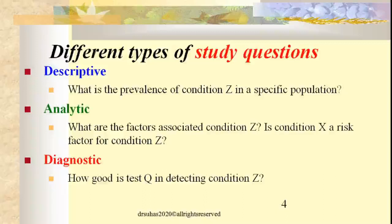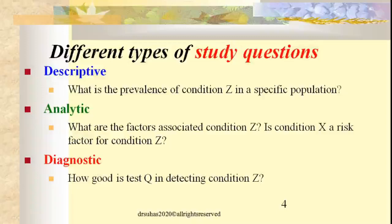Even in Ayurveda, case control study designs can be applied. For example, suppose you want to know whether consumption of curd causes kaffajakasa — the kapha type of cough. You can answer this by designing a case control study. You would have a 2x2 table where cases are those with kaffajakasa, and the exposure is whether they consume curds or not.